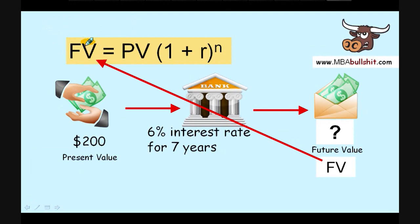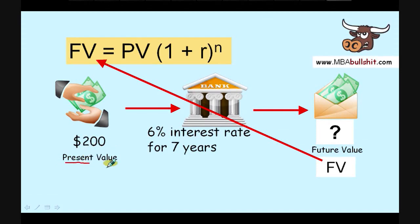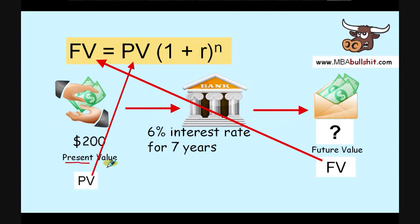This $200 that I'm giving you today is called the Present Value. Present means today. So $200 is known as the Present Value, written as PV. Again, this is just one variable — PV — and that is the same variable you see in the formula as PV.